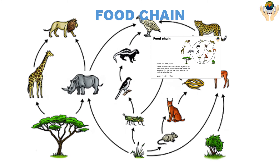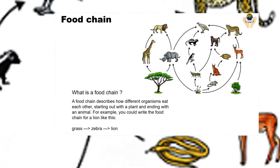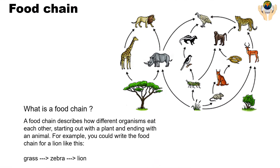What is a food chain? A food chain describes how different organisms eat each other, starting with a plant and ending with an animal. For example, you could write the food chain for a lion like this: grass, zebra, lion. The zebra will eat the grass and the lion will eat the zebra.